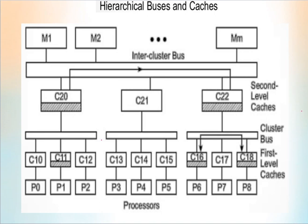I hope you now understand multiprocessor interconnects and one of the multiprocessor interconnect types — the hierarchical bus system. In the next session, I will discuss crossbar switches and multi-stage and combining networks. Thank you.